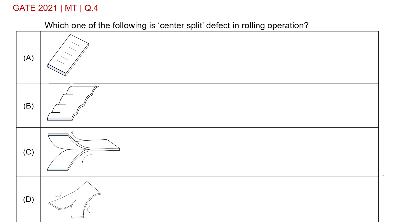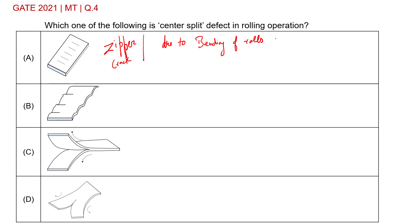In the first image, Option A represents a zipper crack. Zipper crack is generally due to the bending of rolls under high pressure. This leads to the generation of compressive stresses in the edges, while tensile stresses are generated in the center due to bending of rolls under high pressure.